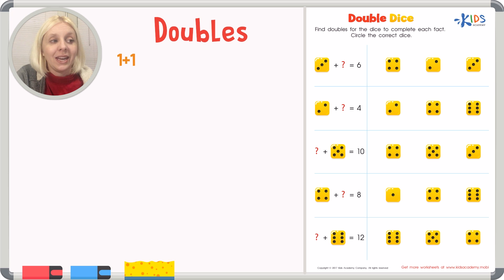So one plus one equals two. The next example of doubles is two plus two equals four. What do you think the next one is going to be? If this is one plus one, two plus two, what do you guess the next one's going to be? Three plus three, right? So three plus three equals six.